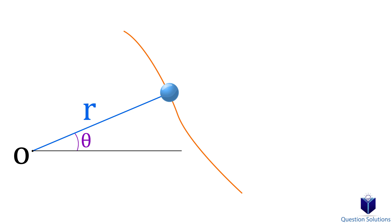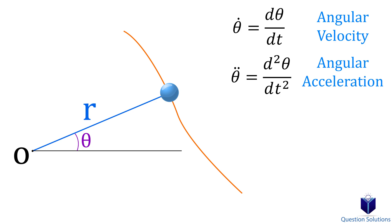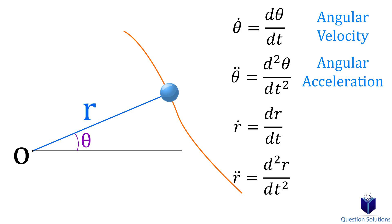A theta symbol with a dot on top is called the angular velocity — it is the derivative of the angle with respect to time. A theta symbol with two dots on top is called the angular acceleration, which is the derivative of the angular velocity. R with a dot on top is the first derivative of the radial coordinate with respect to time, and r with two dots on top is the second derivative.